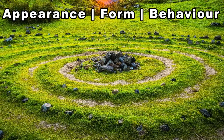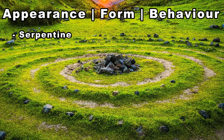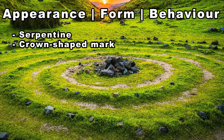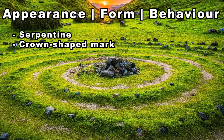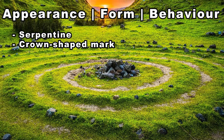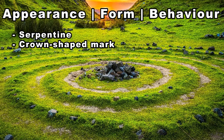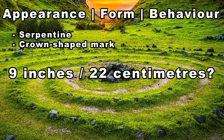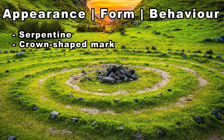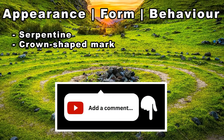Pliny the Elder describes the Basilisk as a relatively small serpent with a crown-shaped white spot on its head. Basilisk translates from Greek to mean something close to 'little king', so we can see where it gets its name. In size, Pliny describes it as 12 fingers, or Roman digitus, in length — this seems to be around 9 inches or 22cm, so not really very big at all. If anyone knows more about Roman units of measurement, feel free to correct me in the comments.